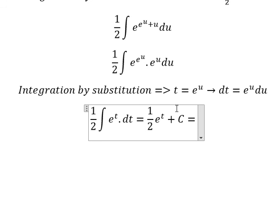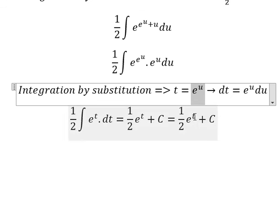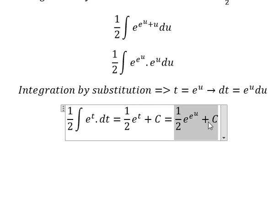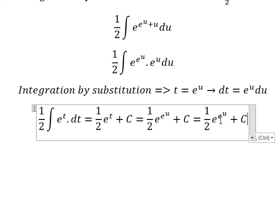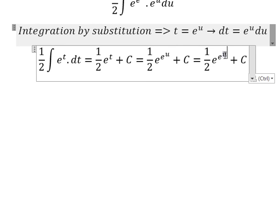Now we need to change t back to the original variable. We have one-half e to the power of t, which becomes e to the power of u. Then u becomes x squared.